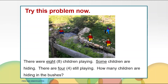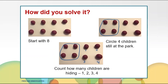Show me what you did. Everyone had some great answers. Let's take a look at some of the ways you solved the problem. Maybe you started with eight counters for the eight children playing, then drew a circle around the four children that were still playing at the brook. Next, you counted how many counters were outside the circle, and that is how many children were hiding in the bushes. There were four children hiding in the bushes.